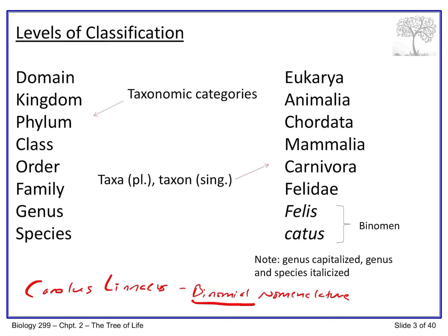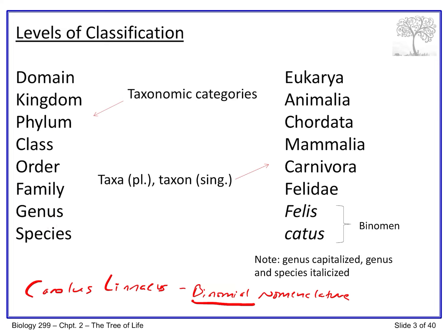The pre-Darwinian view gave no explanation of why features were similar other than that they were created that way — a very unsatisfying explanation. In the Darwinian view of descent from a common ancestor, 'closely related' means two species share features in common with the ancestor who gave rise to both. For example, all vertebrates are related by common descent from the first vertebrate organism, which had a vertebral column; all modern vertebrates have it because they inherited it from that common ancestor.